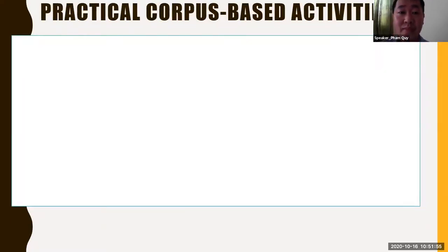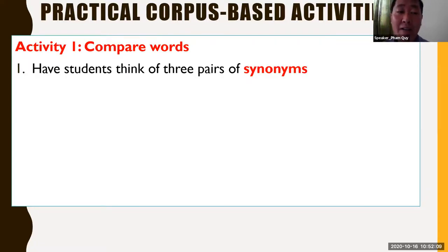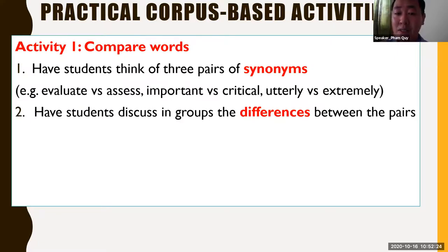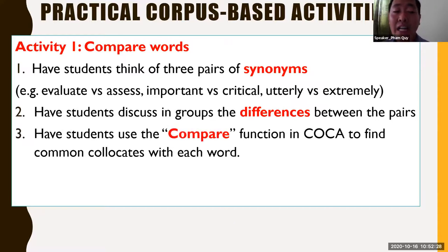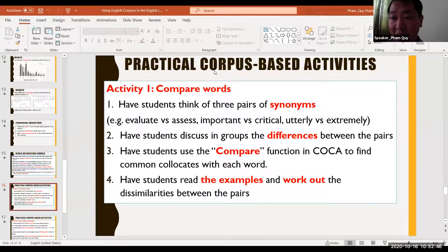Let's move on to practical corpus-based activities. Activity number one: you may want to ask learners to compare words. For example, you can have students think of three pairs of synonyms, such as 'evaluate' and 'assess,' 'important' and 'critical,' or 'stimulate' and 'audit.' After that, you can have students discuss in groups the differences between the pairs, and then use the compare function in COCA to find common collocates with each word, and then read examples and work out the similarities and differences between the pairs. Let me show you how you can do that.